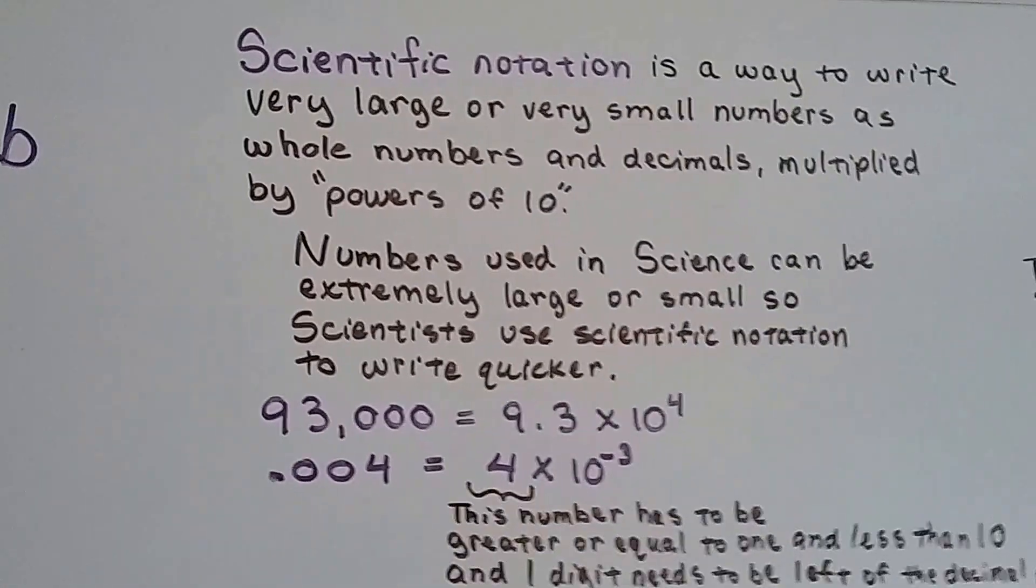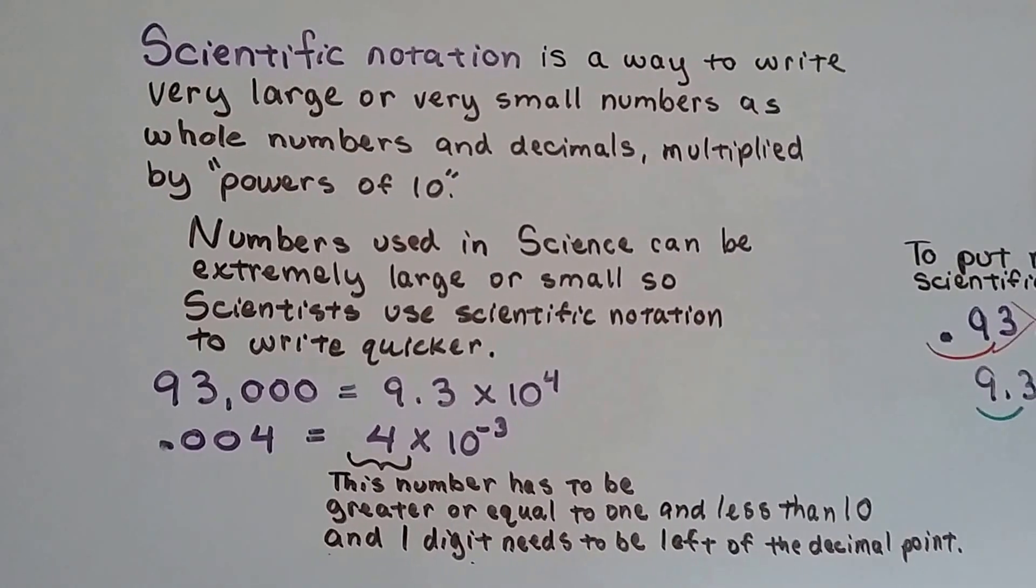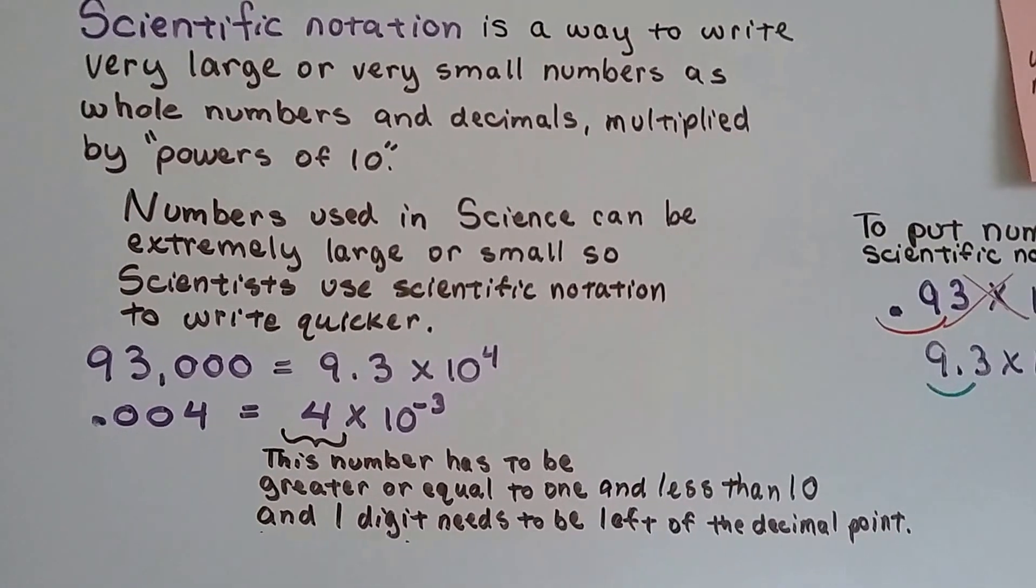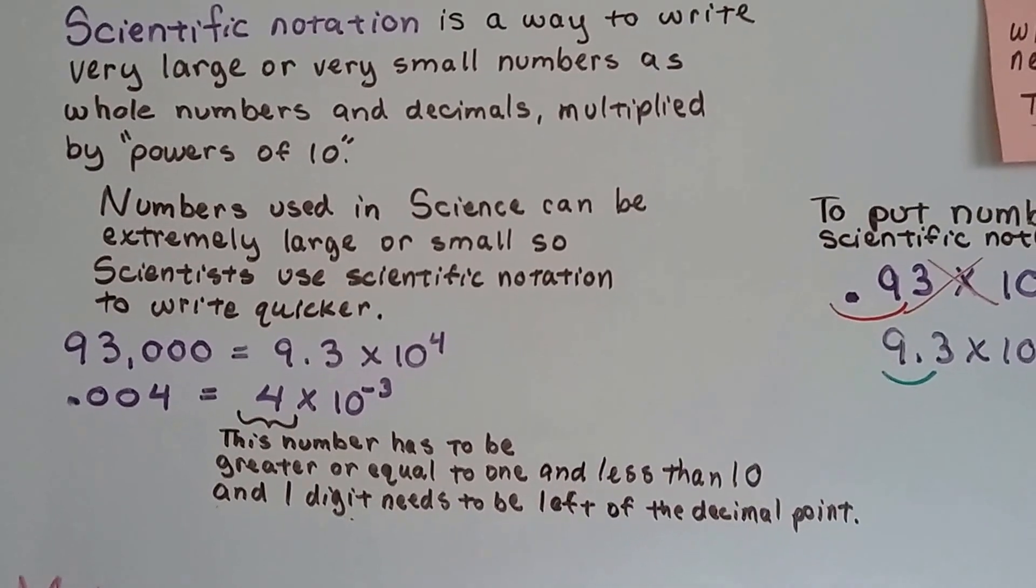As we've discussed scientific notation in the last several videos, we know it's a way to write very large or very small numbers as whole numbers and decimals that are multiplied by powers of 10.